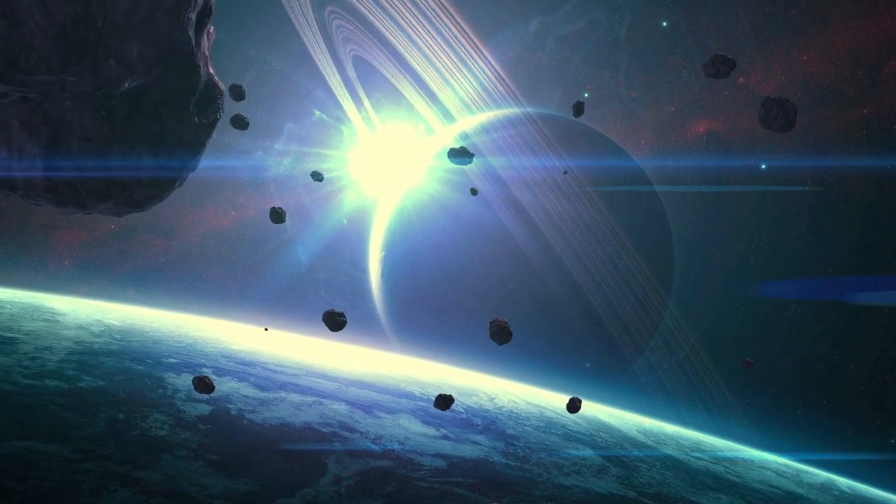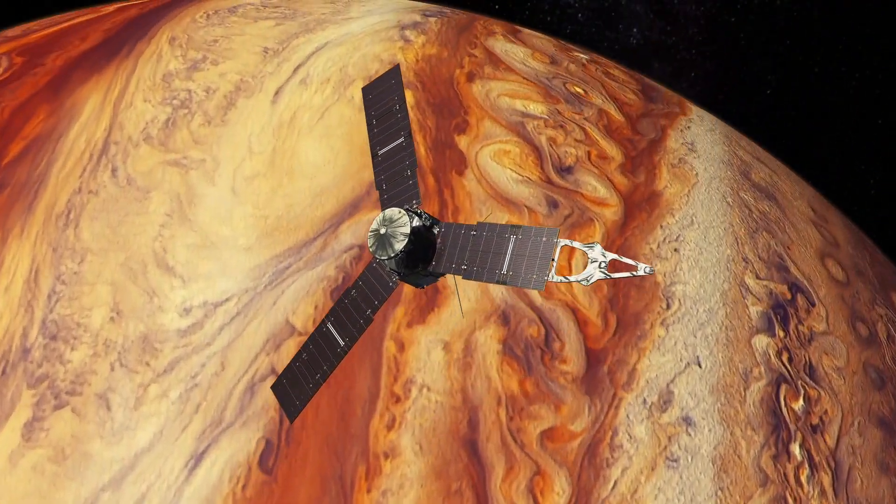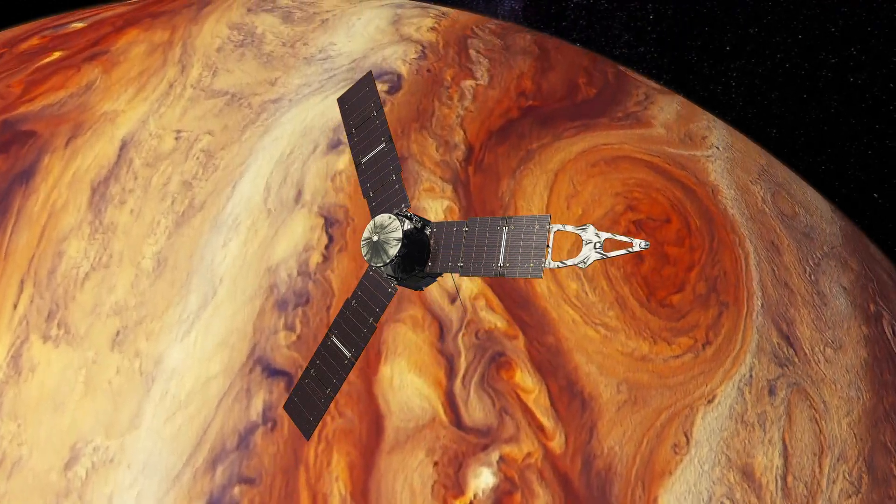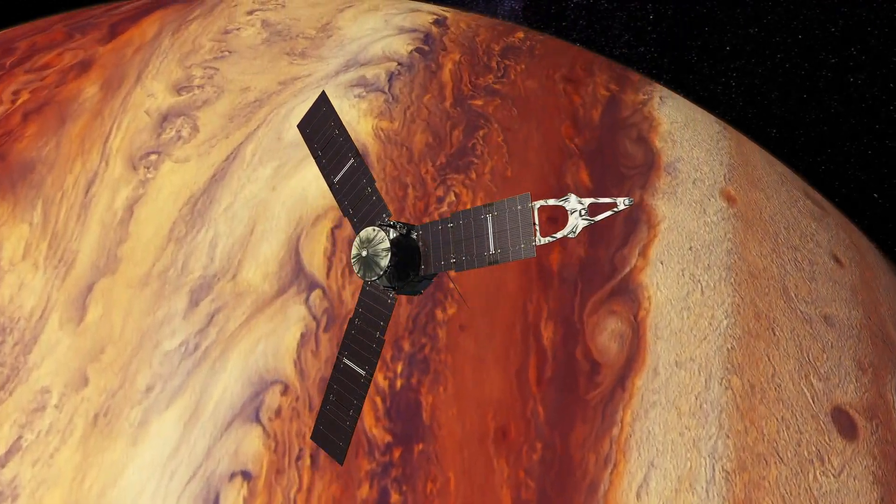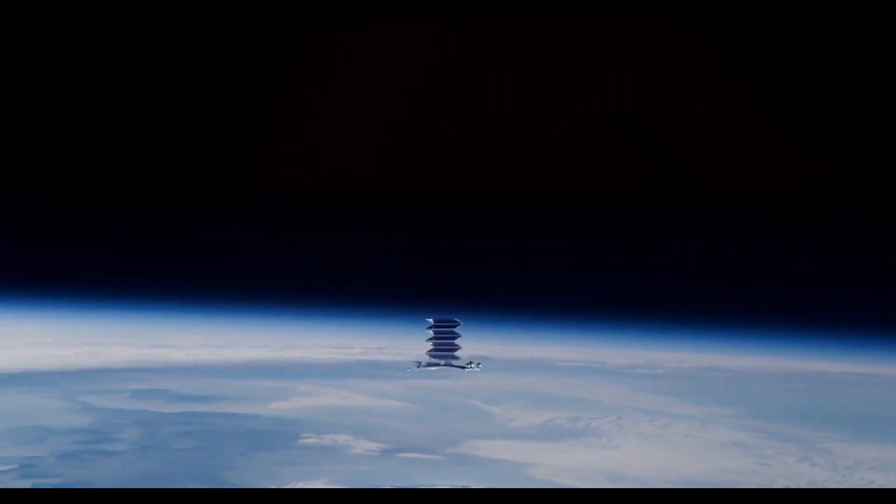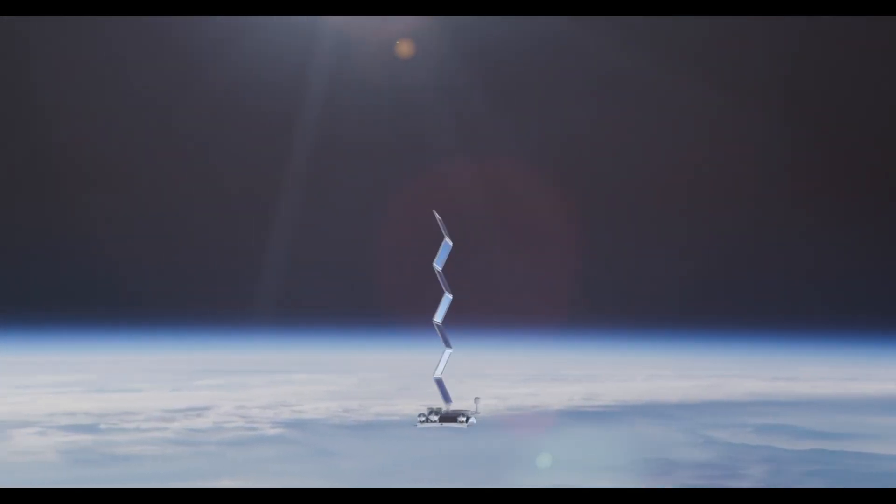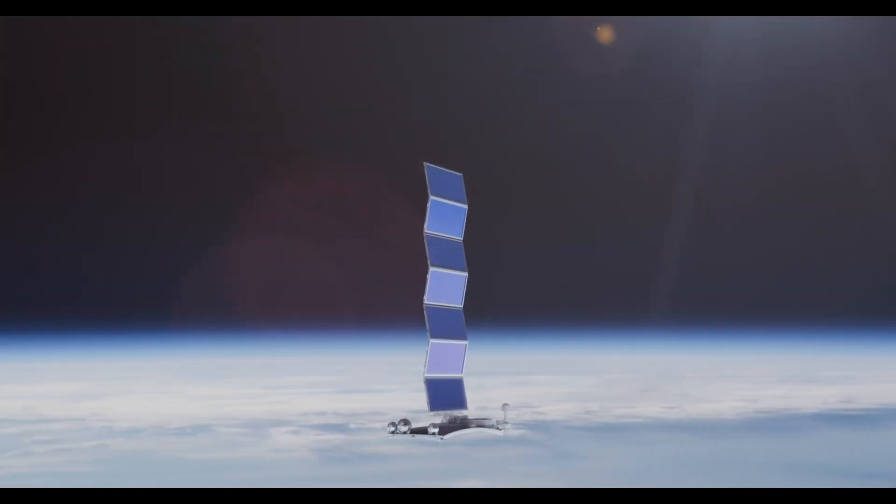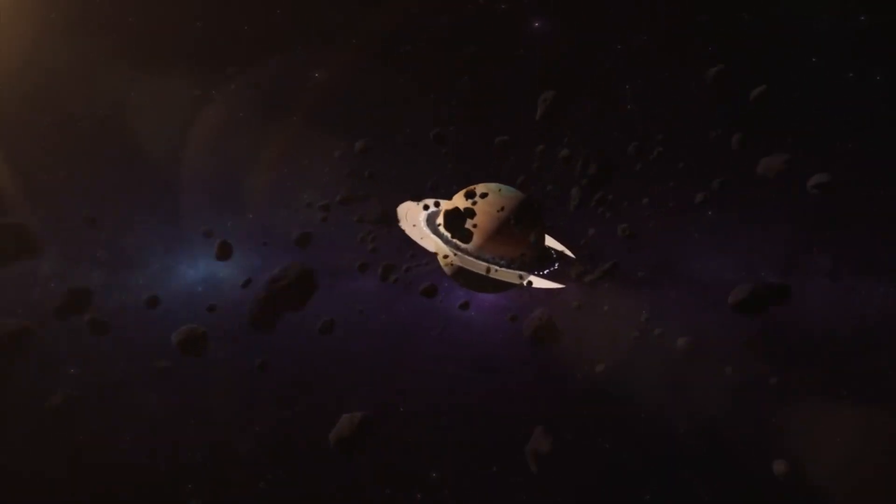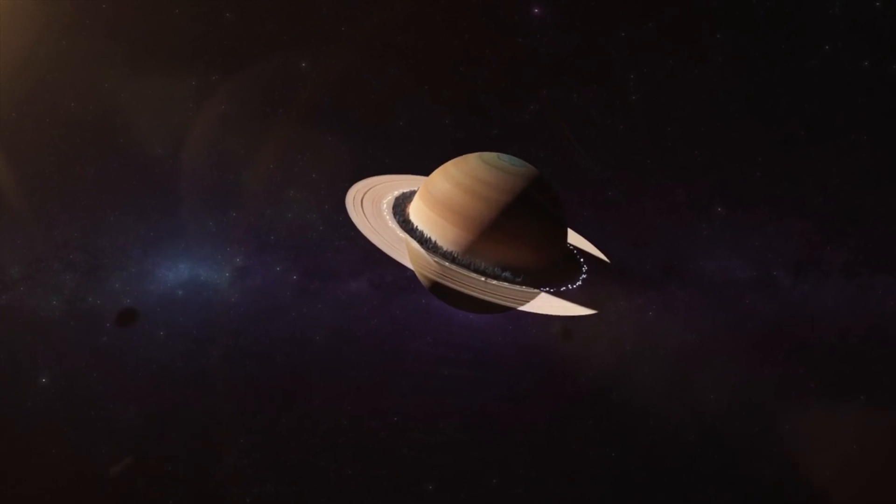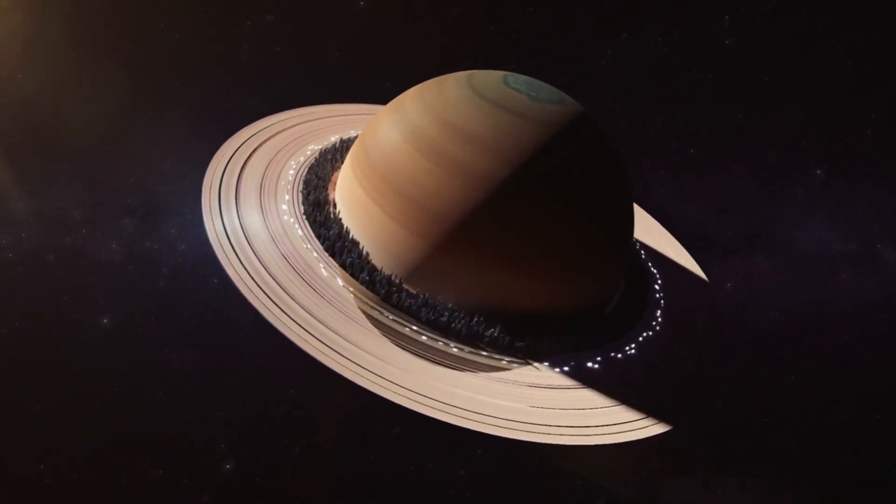Firstly, the spacecraft were built with redundancy in mind. Critical systems have backup components that can take over in the event of a failure. Secondly, the power source for the Voyager missions is the radioisotope thermoelectric generator, which converts the heat from decaying plutonium 238 into electricity. This reliable power source has kept the instruments and communication systems operational for decades.